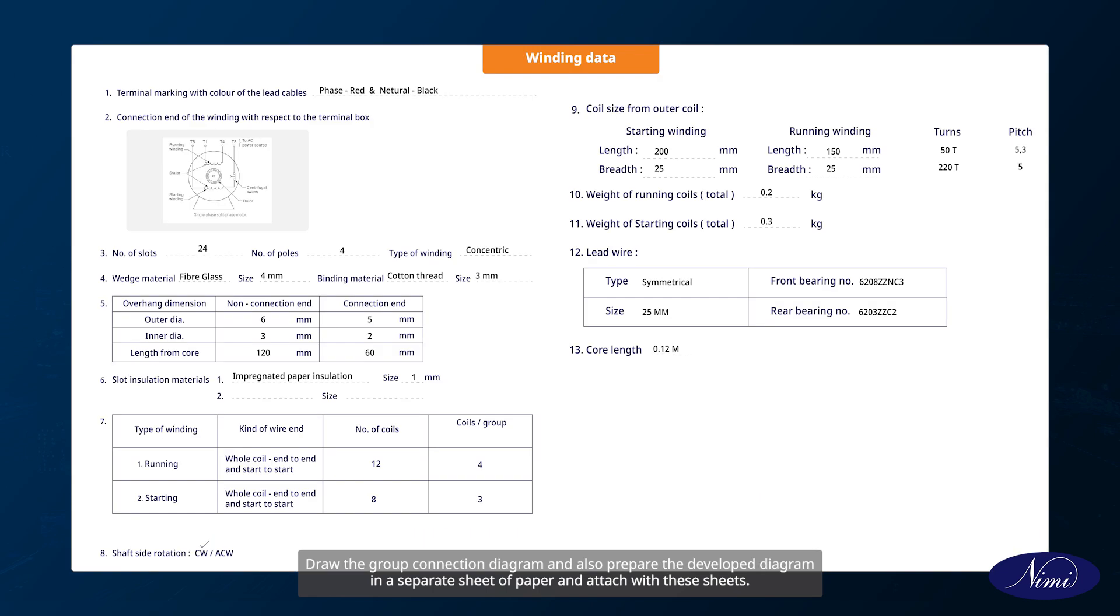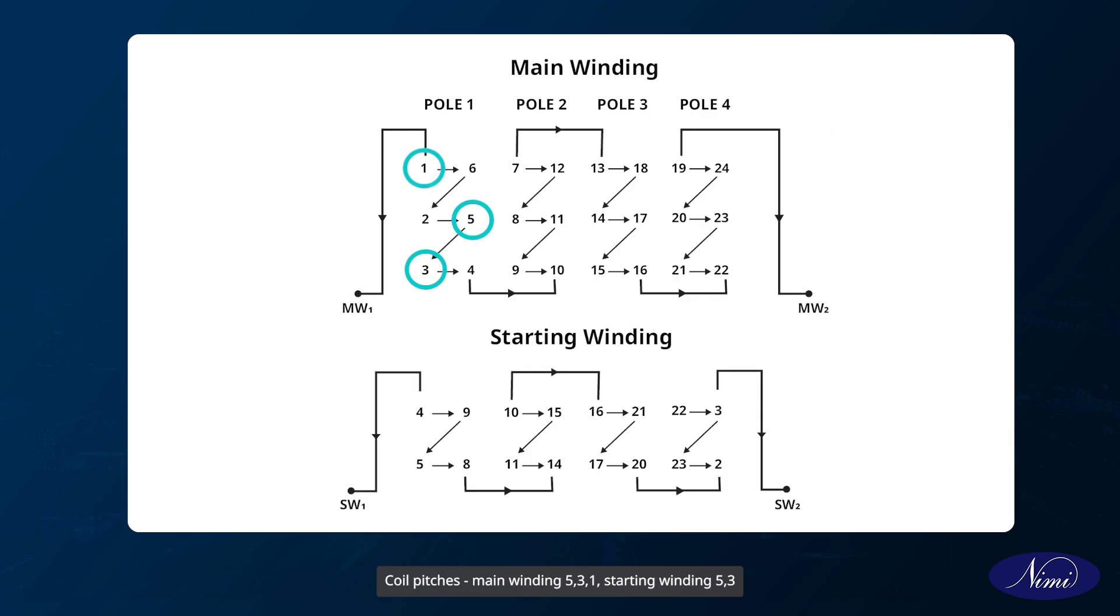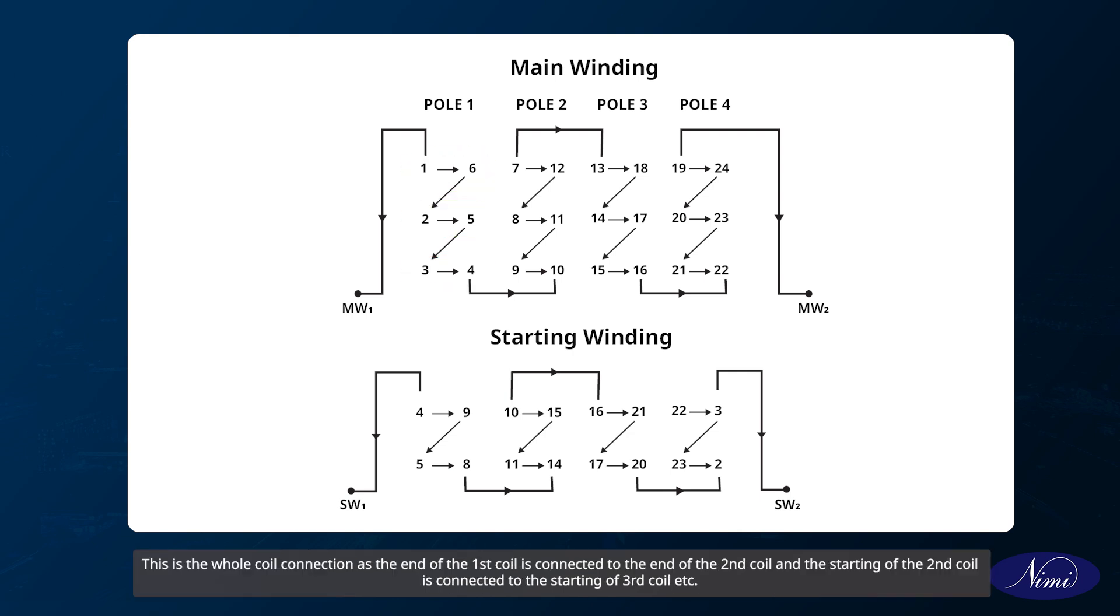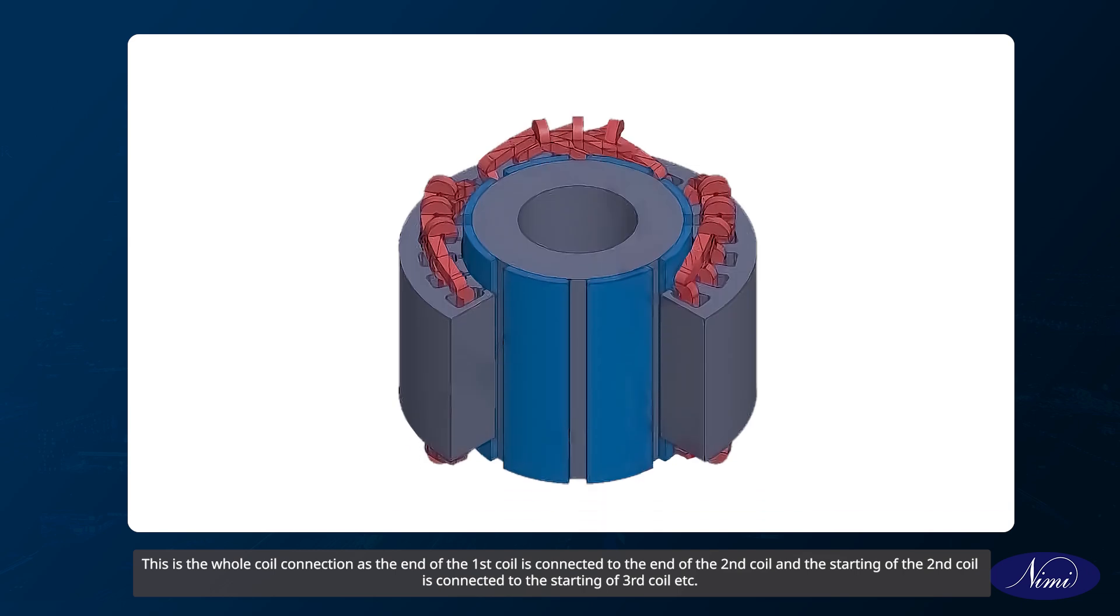Information from collected data: coil pitches main winding 5-3-1, starting winding 5-3. Coil through main winding 1-2-6, 2-2-5, 3-2-4. Starting winding 1-2-6, 2-2-5. This is the whole coil connection as the end of the first coil is connected to the end of the second coil and the starting of the second coil is connected to the starting of third coil.